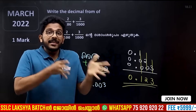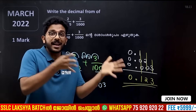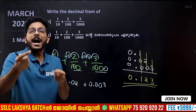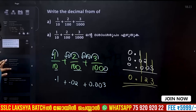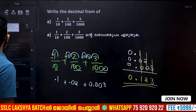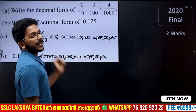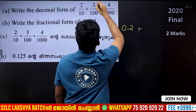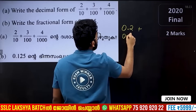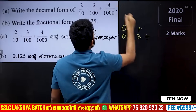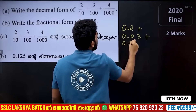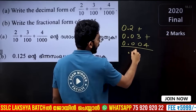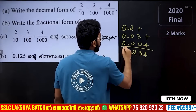Decimal — the fraction of the decimal. In this question: 2 by 10, notice that is 0.2; 3 by 100, you are going to add 0.03; and 9 by 1000, you are going to add 0.004.